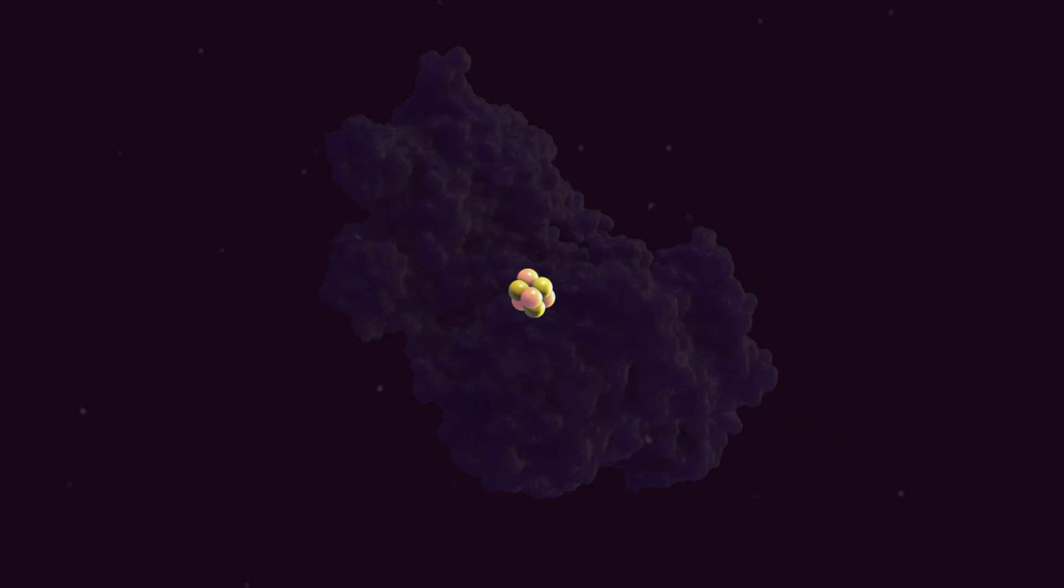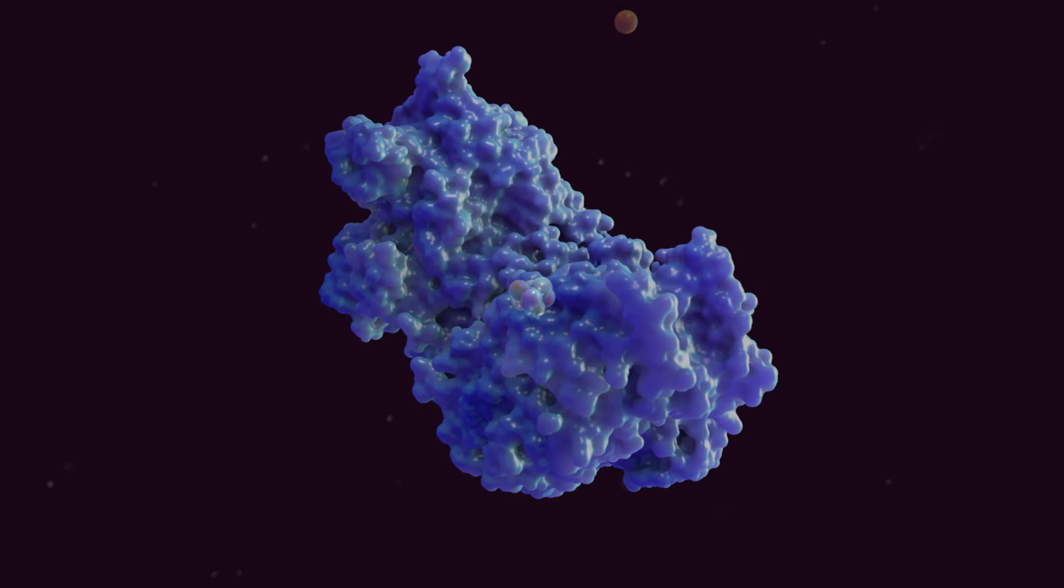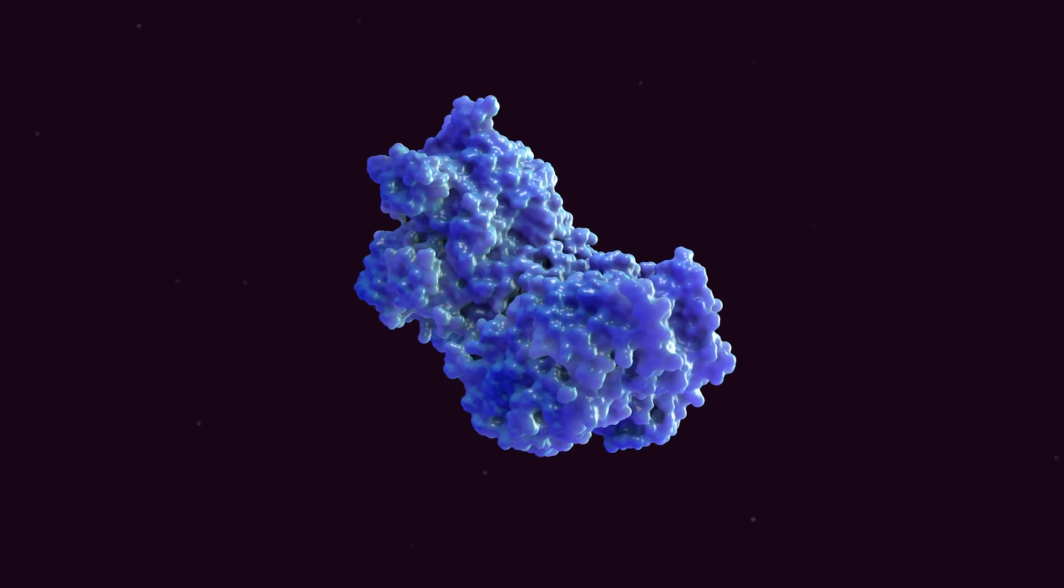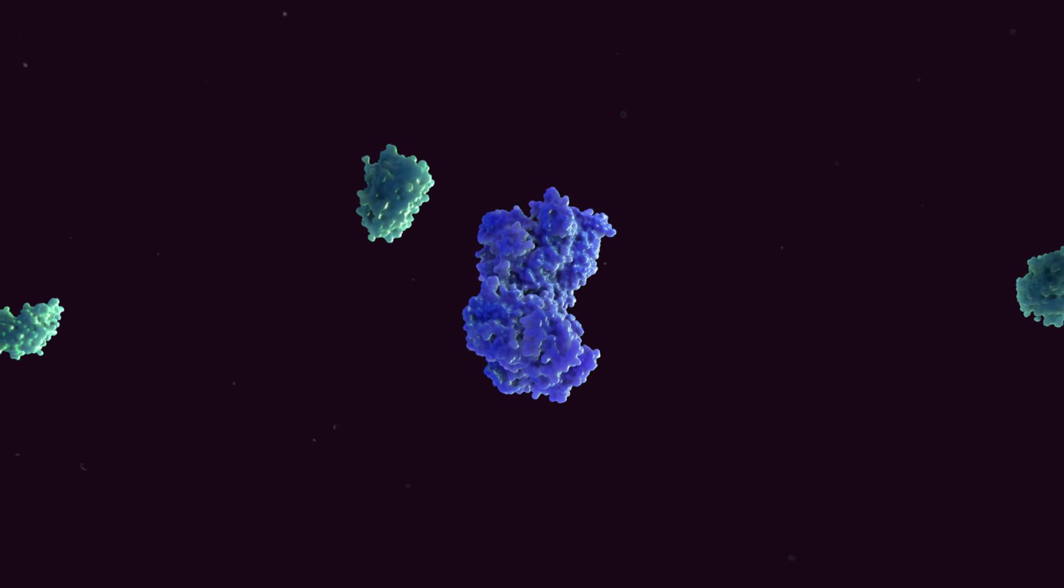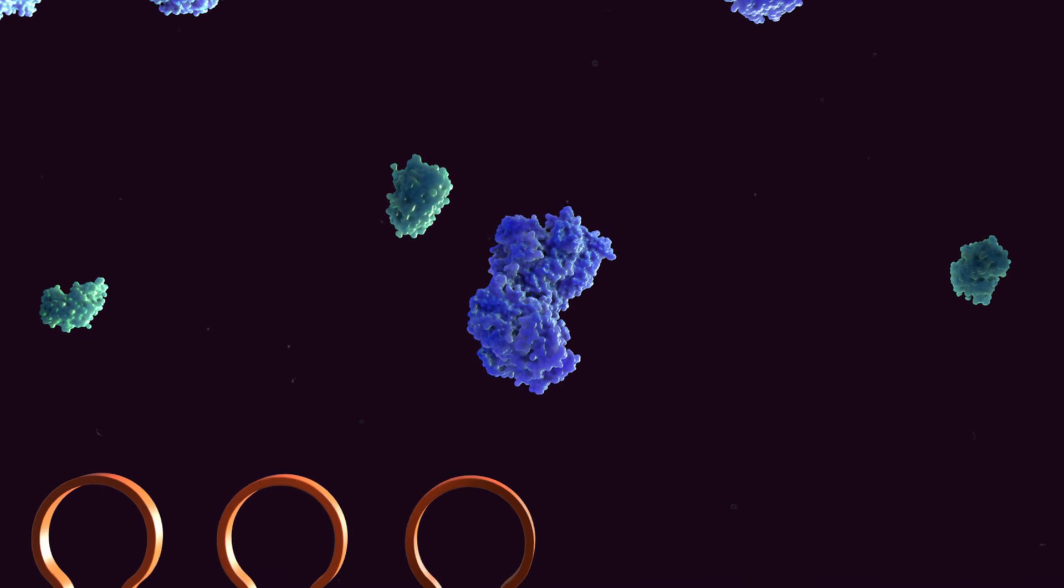During iron deficiency, the iron-sulfur clusters lose an iron atom, resulting in a three-iron, four-sulfur cluster. In this state, the iron-sulfur clusters dissociate from the IRP proteins.